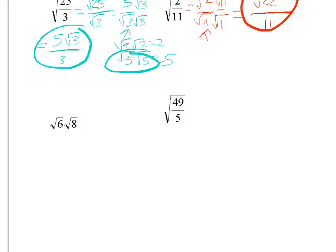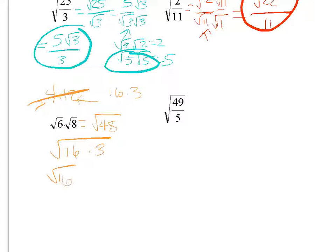The square root of 6 times the square root of 8—put them together: 6 times 8 is 48. Looking for the largest perfect square: 16 times 3 is 48. Split into square root of 16 times square root of 3. Square root of 16 is 4, so the answer is 4 square roots of 3.